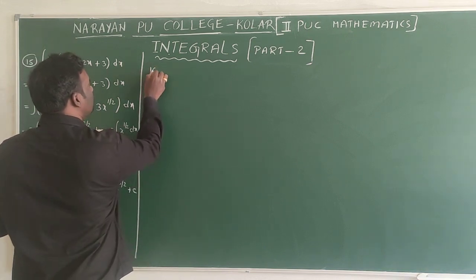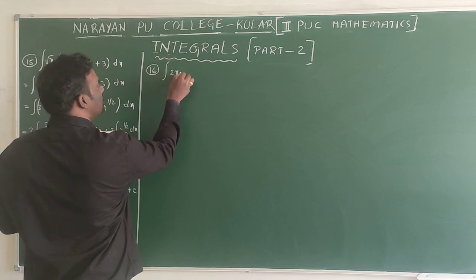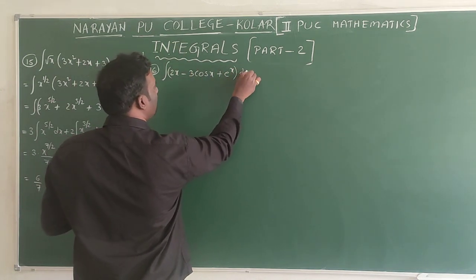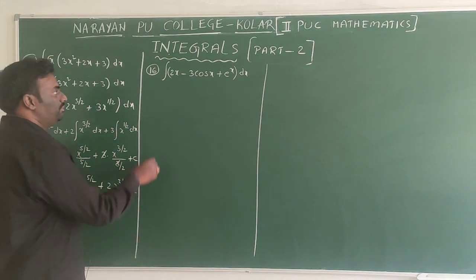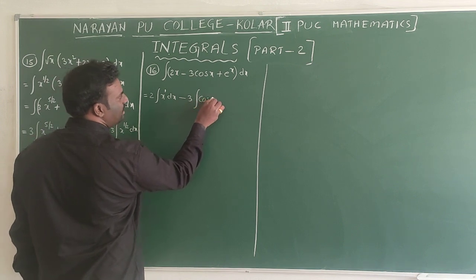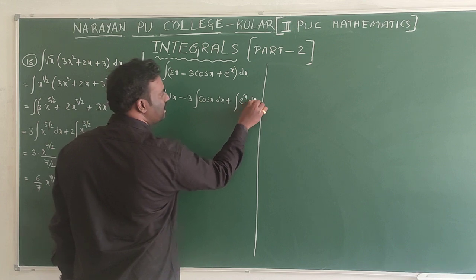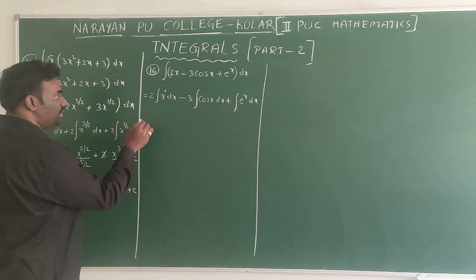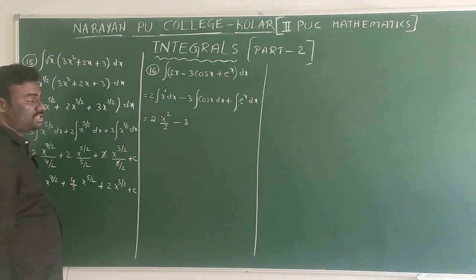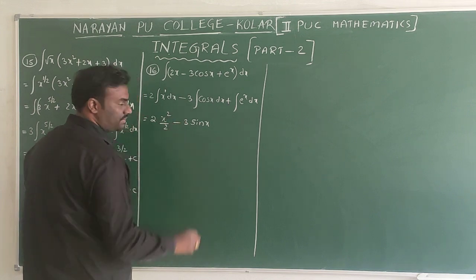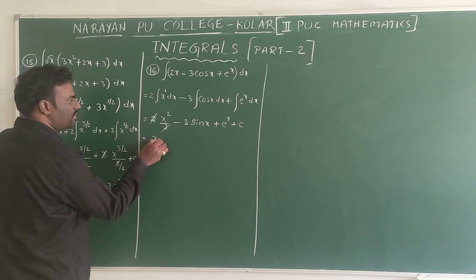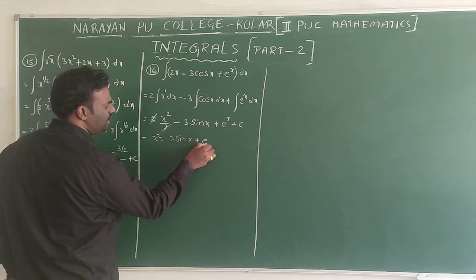Question 16: evaluate integral (2x - 3cos x + eˣ) dx. Integrate each term: 2 is constant, x has power 1, so x^(n+1)/(n+1) gives x²; minus 3 times integration of cos x is sin x; integration of eˣ is eˣ. The 2s cancel. Answer: x² - 3sin x + eˣ + c.